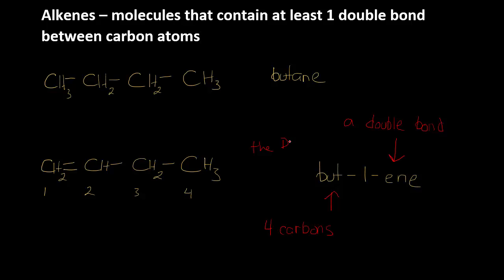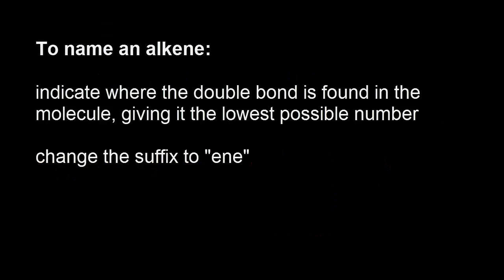And the number one tells me that the double bond is at carbon number one. So to name an alkene, indicate where the double bond is found in the molecule, giving it the lowest possible number, then change the suffix to ene, e-n-e.